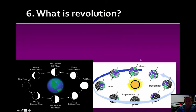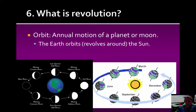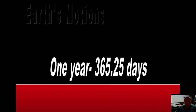What is revolution? This is the other motion that Earth does. This is an orbit, which is the annual motion of a planet or a moon around what it's revolving around. Earth orbits or revolves around the sun. Our moon also orbits Earth. Earth's revolution takes one year, which is 365.25 days.